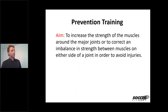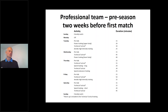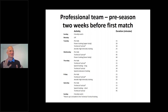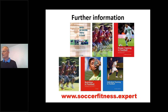Prevention training aims to increase strength in the muscles around major joints or to correct strength imbalances between muscles on either side of a joint, in order to avoid injuries. That covers our focus on the pre-season today — we've moved through a lot of different types of training quickly, but you will have the chance to get more detail on each in the future. Many of the exercises described today are also available in a book that you can access tomorrow for reference.